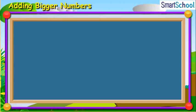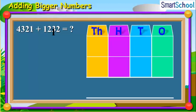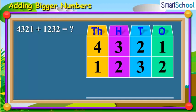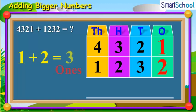Here we need to add 4,321 plus 1,232. Let us first place the numbers as shown. Now, as already learnt, we will first add the ones together, which will be 1 plus 2 is equal to 3 ones. Now, place 3 at the ones place.